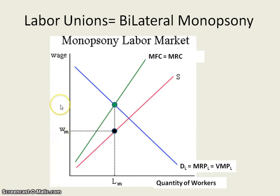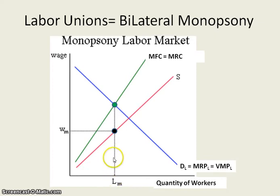What happens with unions in a monopsony is that they all band together — like a band of brothers where it's all-or-nothing. Everybody has to get paid the same amount. They don't want to lose the number of workers being hired, so their goal is not just a higher wage rate, but they're willing to forego some people being hired.